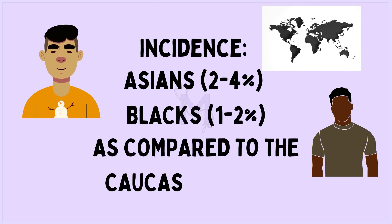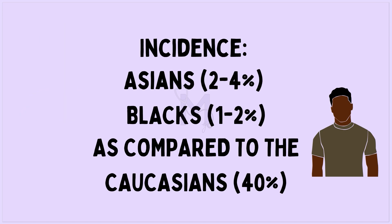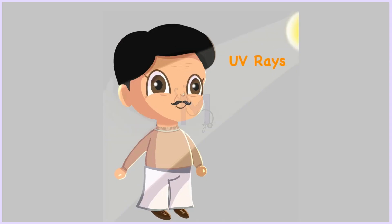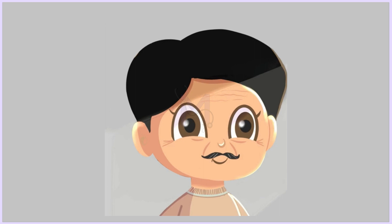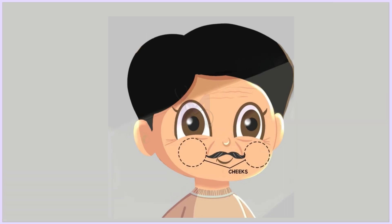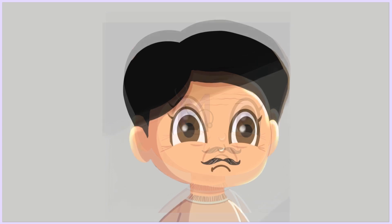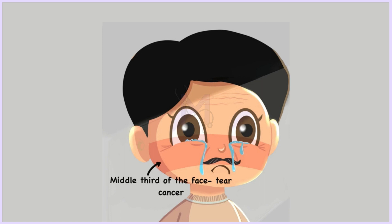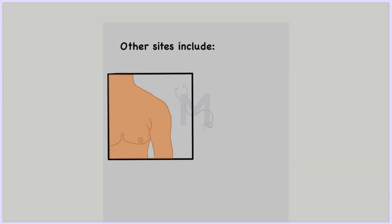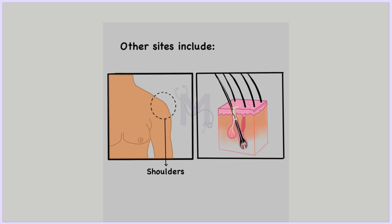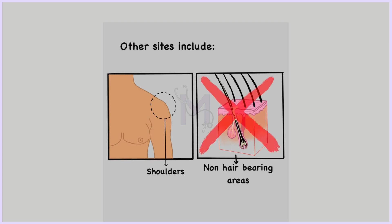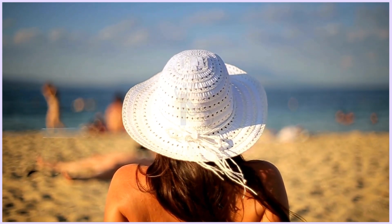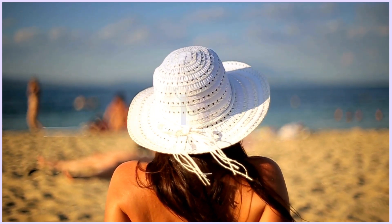The lesion most often affects sun-exposed areas of the face — the nose, cheek, and periorbital areas. An easy way to remember is that this lesion grows in regions where teardrops roll down on the face, usually the middle third area, and it is sometimes referred to as the 'tear cancer.' It can also affect the shoulders and extremities involving non-hair-bearing skin.